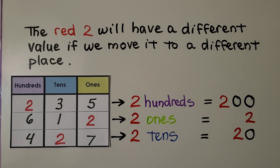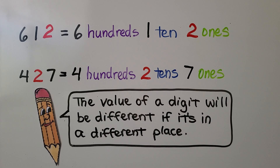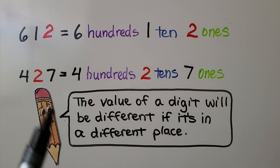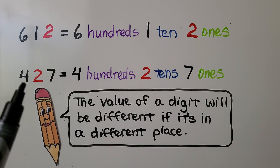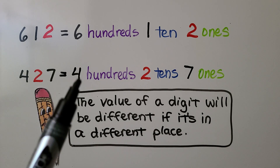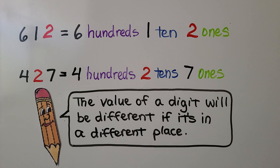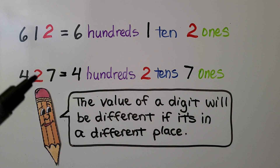It has a different value if we move it to a different place. Here we have 612 — that's six hundreds, one ten, two ones. Here we have 427 — that's four hundreds, two tens, seven ones. Here the two is two ones; here the two is two tens. The value of a digit will be different if it's in a different place.